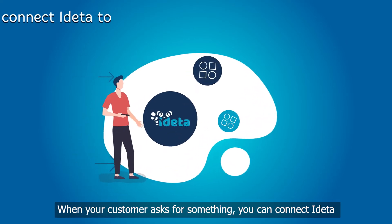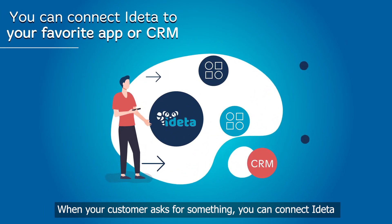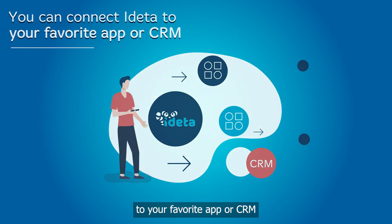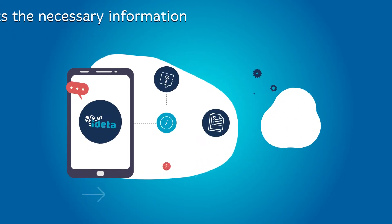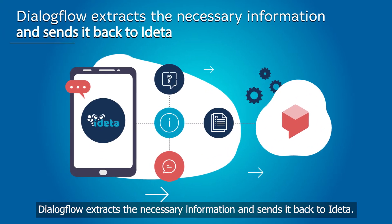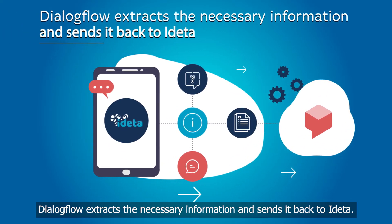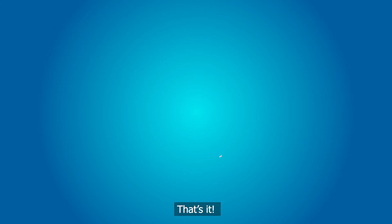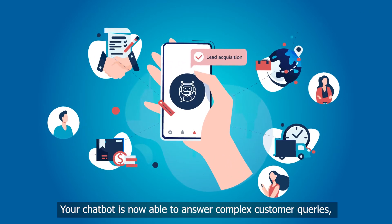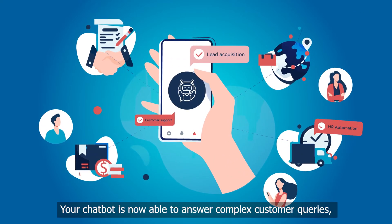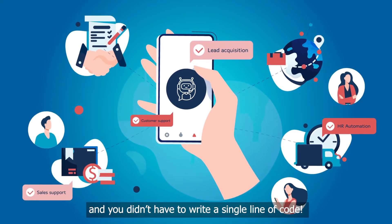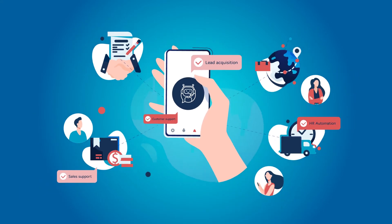When your customer asks for something, you can connect IDETA to your favorite app or CRM. Dialogflow extracts the necessary information and sends it back to IDETA. That's it! Your chatbot is now able to answer complex customer queries, and you didn't have to write a single line of code.